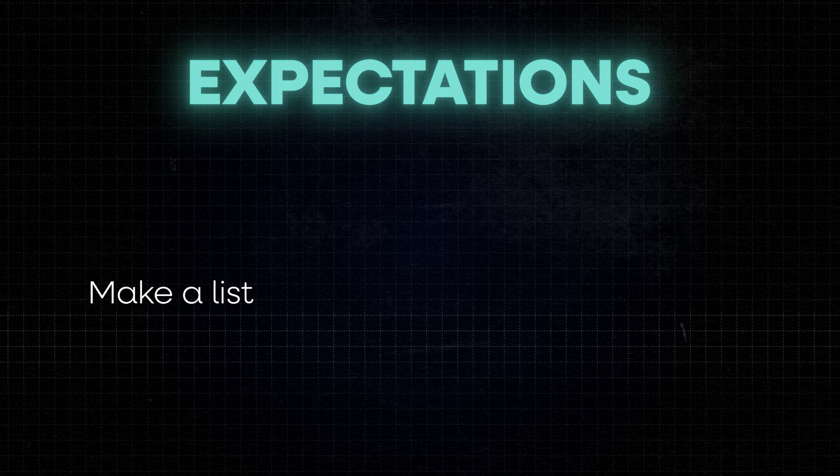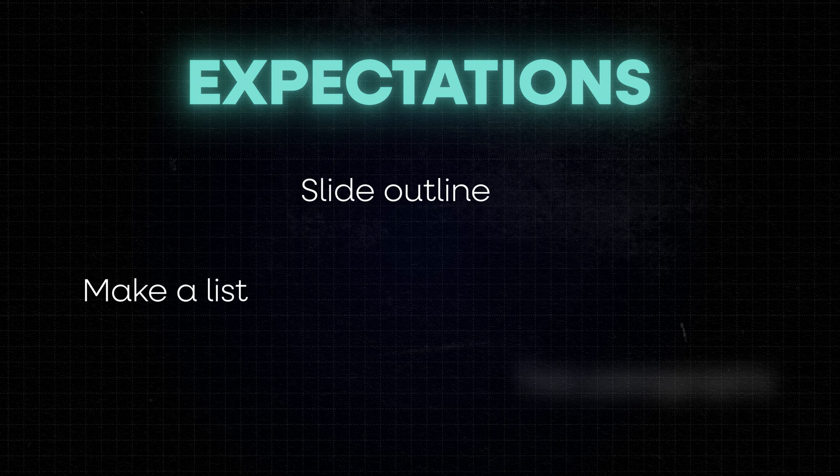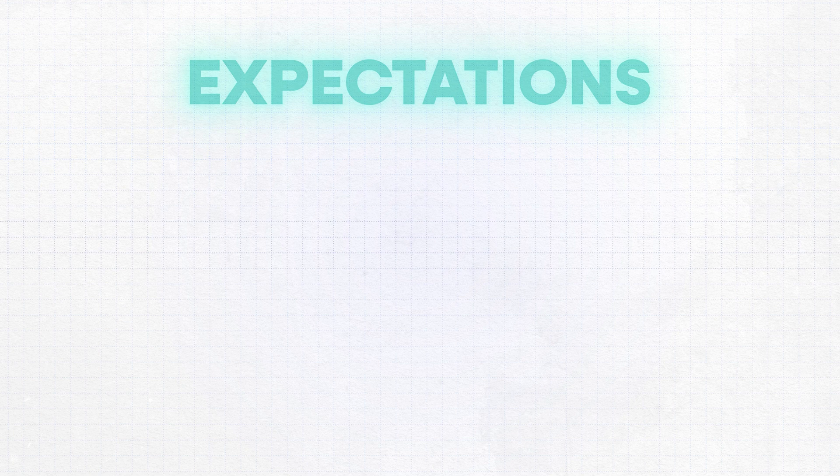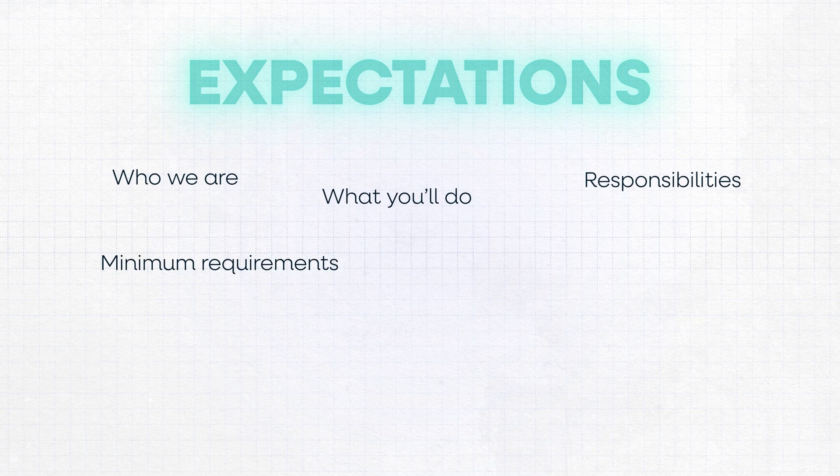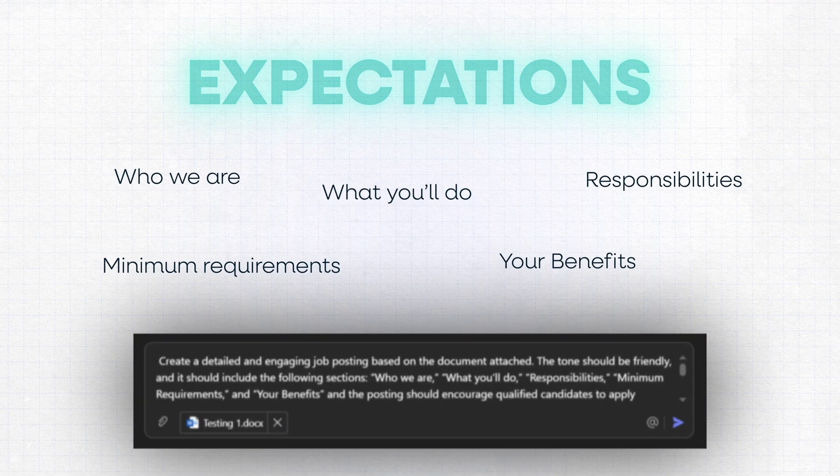Finally, for expectations, some sort of formatting cue is already usually enough — like 'make a list,' 'a slide outline,' or 'two paragraphs.' But you can also go further and showcase the exact structure you want Copilot to use. For example, if you're writing a job posting with sections like 'who we are,' 'what you will do,' 'responsibilities,' 'minimum requirements,' and 'benefits,' you can include those section headers right into the prompt — essentially giving Copilot a template to fill in for you.